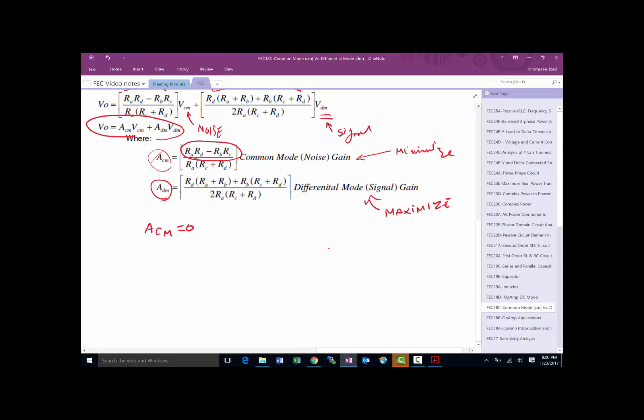So the output is absolutely going to be only dependent on signal in the ideal situation. If that's the case, then we find out that RA times RD equals RB times RC, because that's going to make it go to zero.